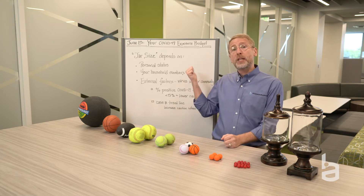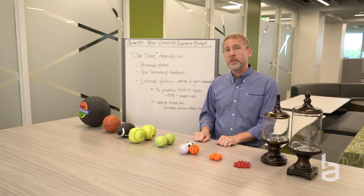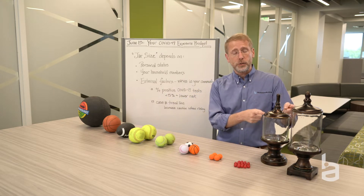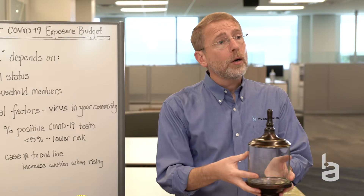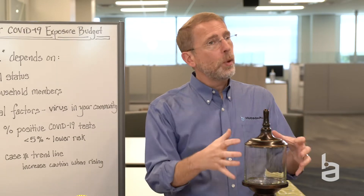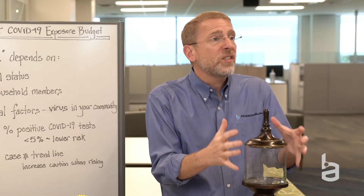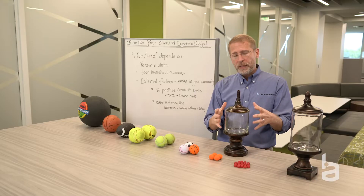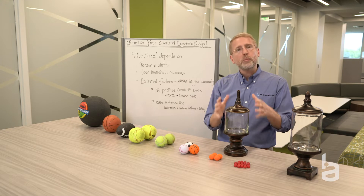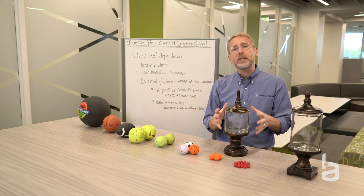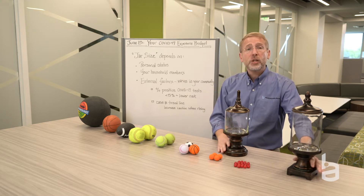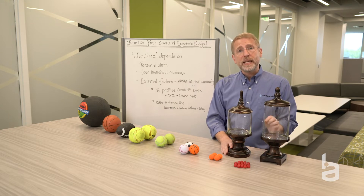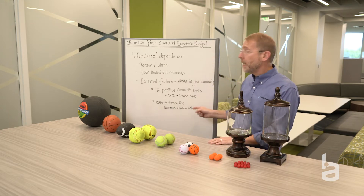Traditionally it's just me and the trusty whiteboard, but for this video I brought a set of props. Let's get started with these jars. The jar represents your exposure allotment — your risk allotment for a 10 to 14-day window. You can think about this as all the activities that potentially bring you into contact with an infected person. The first question is: how big is the jar? There are three key things that influence the size of the jar.